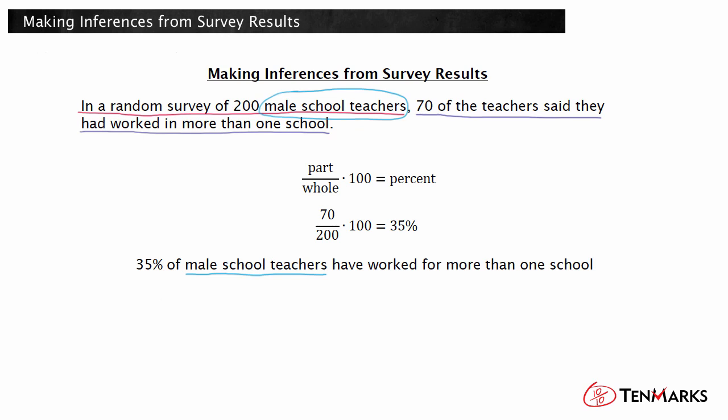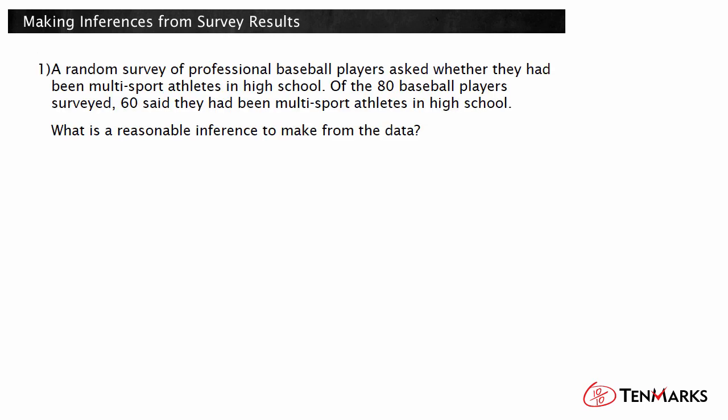Let's make an inference from another set of survey results. Take a look at this example. A random survey of professional baseball players asked whether they had been multi-sport athletes in high school. Of the 80 baseball players surveyed, 60 said they had been multi-sport athletes in high school. What is a reasonable inference to make from the data?